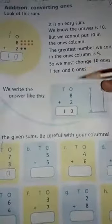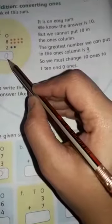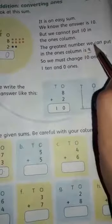Addition: converting ones. Let me discuss the main points first. It is an easy sum. We know the answer is 10. 8 plus 2, our answer is 10. But we cannot put 10 in the ones column, because the greatest number we can put in the ones column is 9.